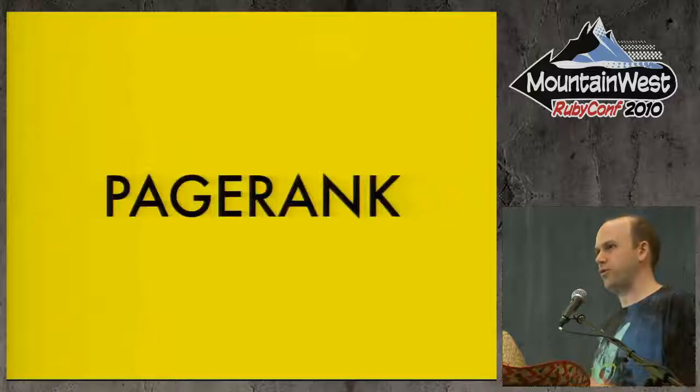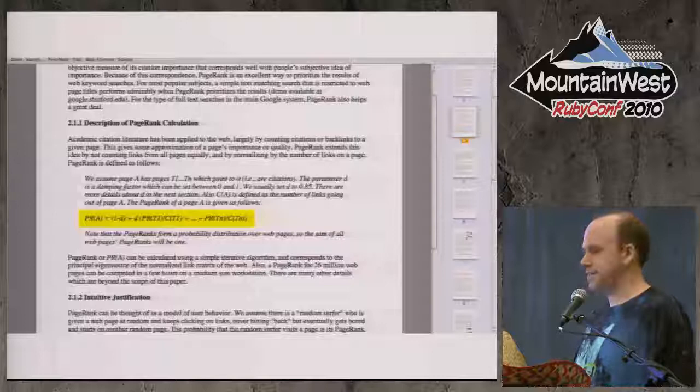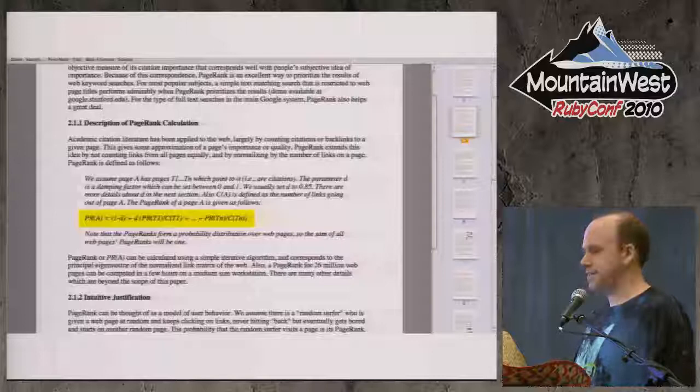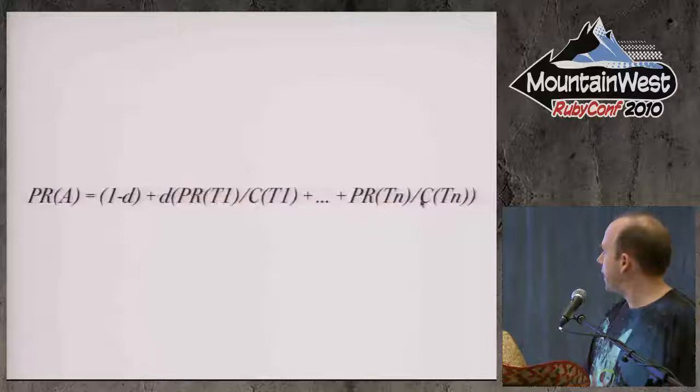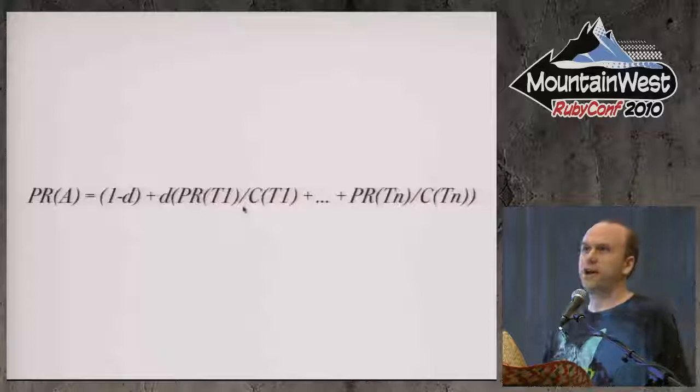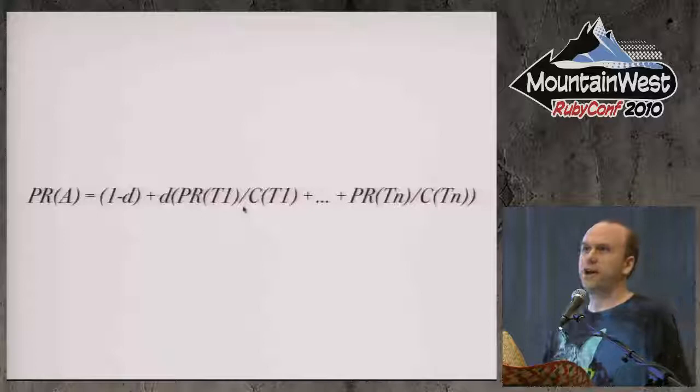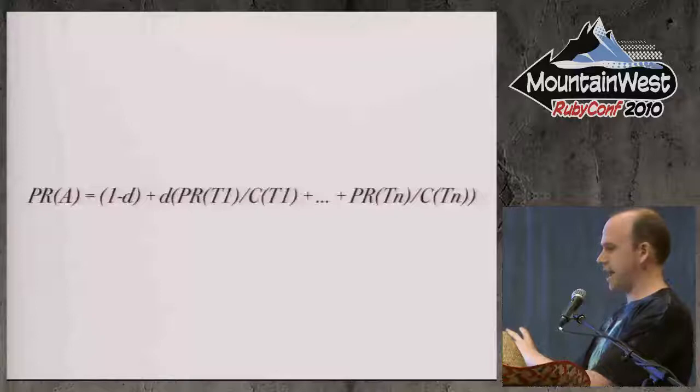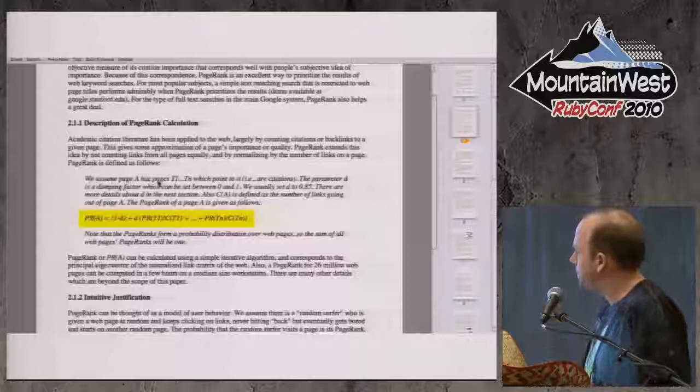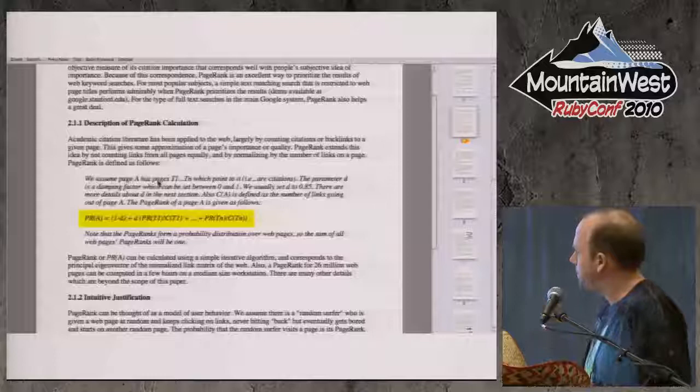So next thing I want to explain is going to seem like a bit of a tangent, but I want to tell you how Google PageRank works. So this is the original white paper on Google PageRank. And this is the algorithm. And here's where the math comes in. So this says that the page rank of a given page is equal to a dampening factor applied to the page rank. This is iterating, right?